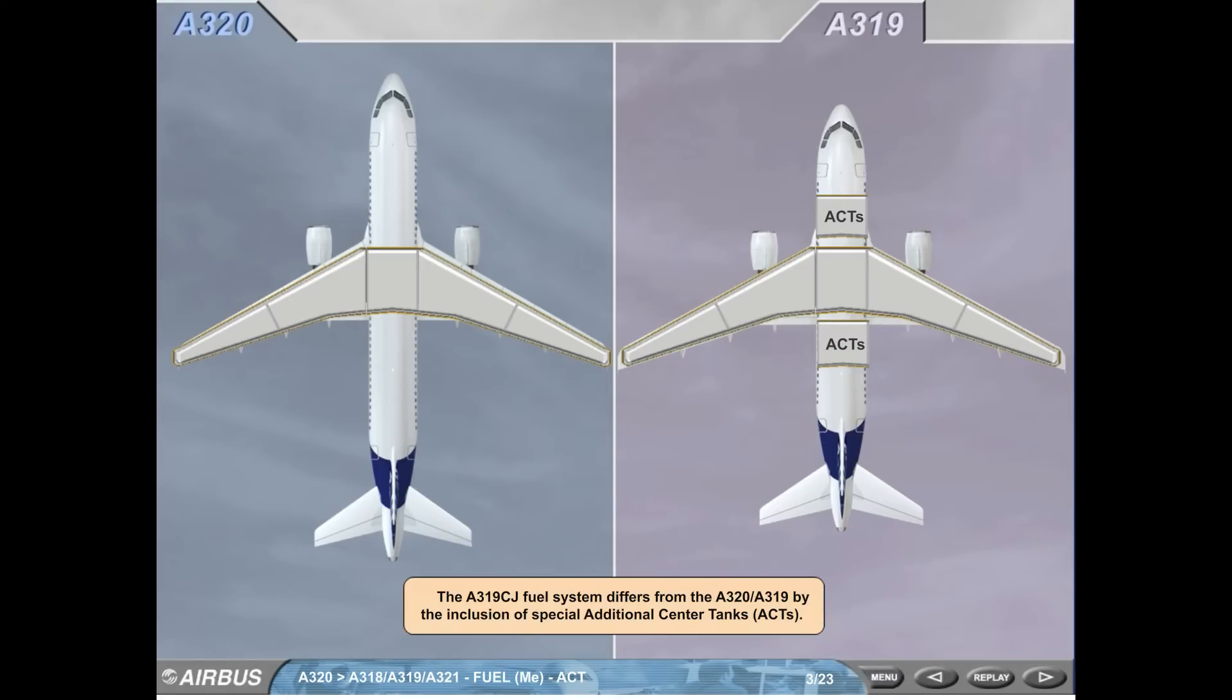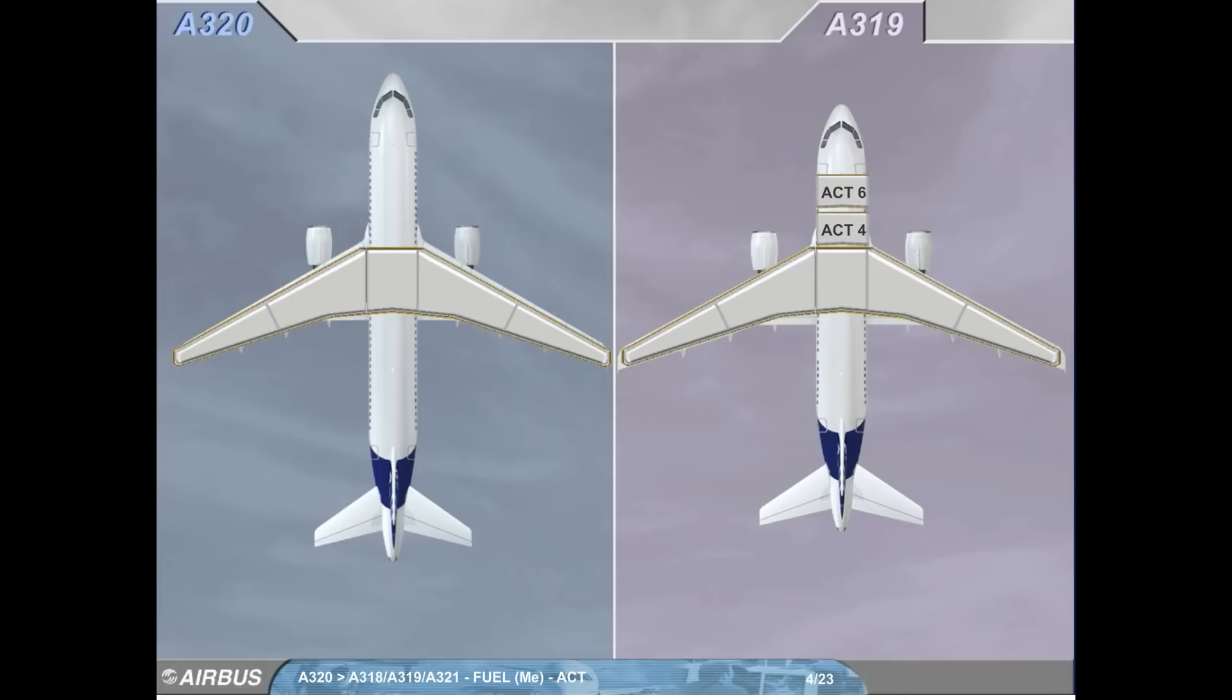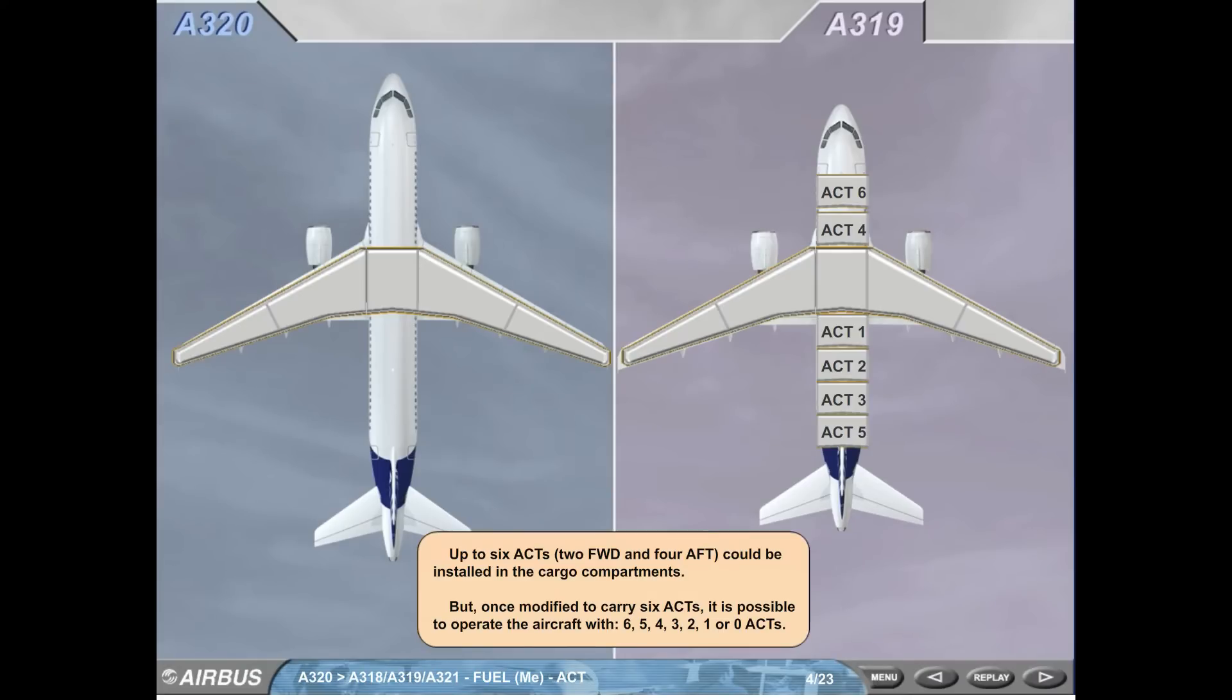The A319CJ fuel system differs from the A320 A319 by the inclusion of special additional center tanks, ACTs. Up to 6 ACTs, 2 forward and 4 after, could be installed in the cargo compartments.